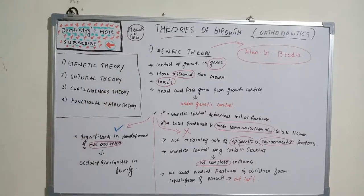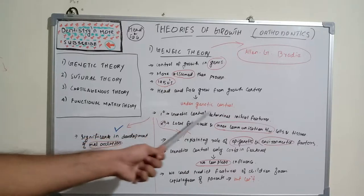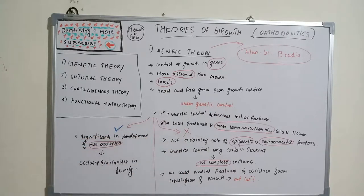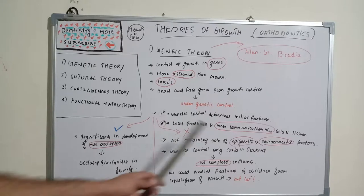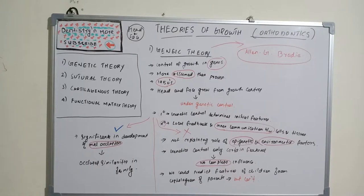This is the first theory, genetic theory, given by Alan G. Brody: complete control of genes, primary initial control on basic features with cells and tissues inner communication and local feedback. There is no emphasis on epigenetic and environmental factors, so it's rejected. It has a little influence on malocclusion because there are occlusal similarities in families. Now let's move on to the sutural theory.